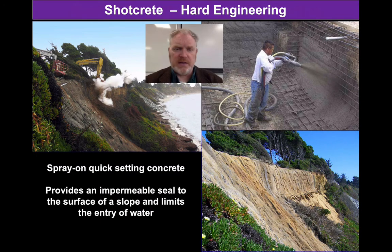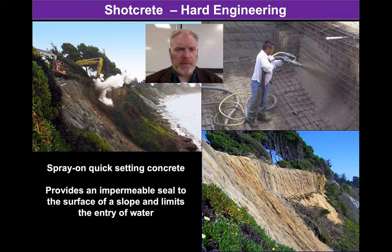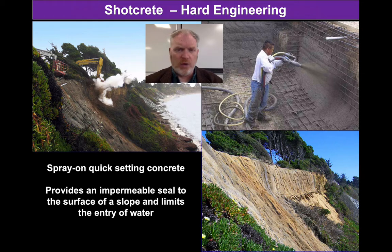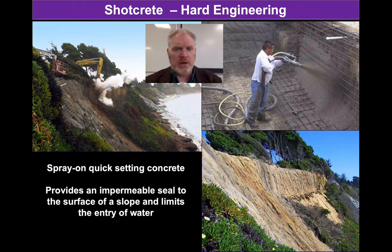Another way of fixing the slope in place is to use shotcrete — a spray-on concrete. You fix a mesh to your slope, spray it with concrete, and it creates an impermeable surface at the top. It stops water getting into your slope, which can be a good thing, and holds things together. This can be very good with a relatively loose slope, but it's not likely to hold back a slope where the whole body of rock material is unstable and likely to slide.